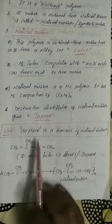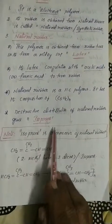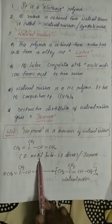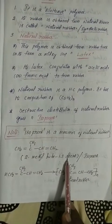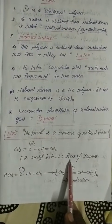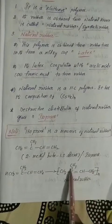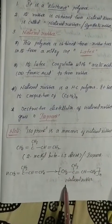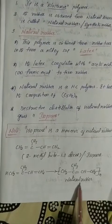The IUPAC name of isoprene is 2-methyl-buta-1,3-diene. It is commonly known as isoprene. A number of isoprene units connected together form natural rubber.